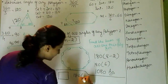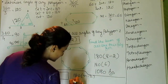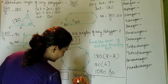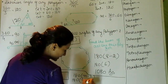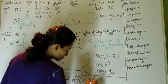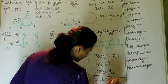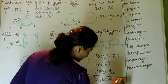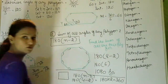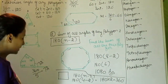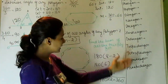For a quadrilateral, we apply the formula 180 multiplied by (N minus 2), where N equals 4 sides. So it is 180 times (4 minus 2), which equals 180 times 2, giving us 360 degrees.